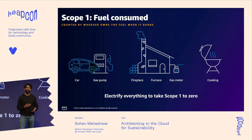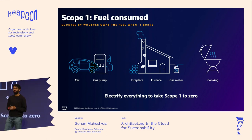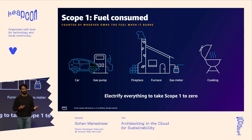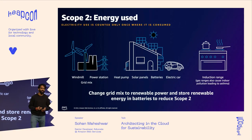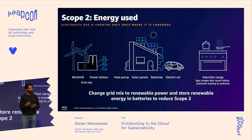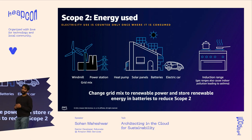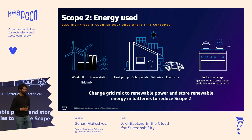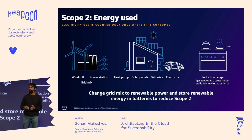In a data center, you might use a generator — that's a scope one emission. If you electrify all of this, you're reducing scope one to zero. Scope two is energy used, and this includes electricity, renewables, windmills, power stations, grids, and so on. There is a real move worldwide to shift to these sorts of energy sources.